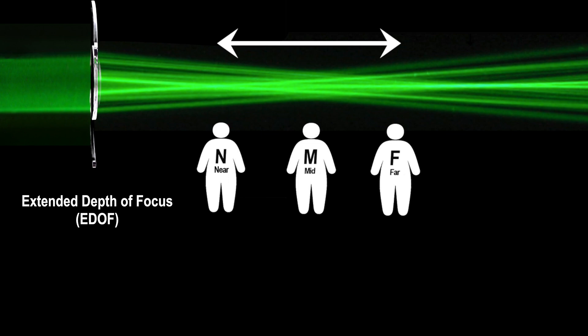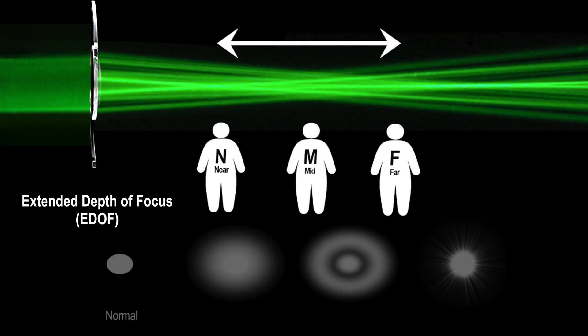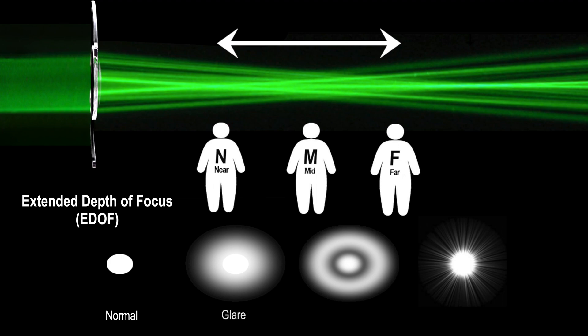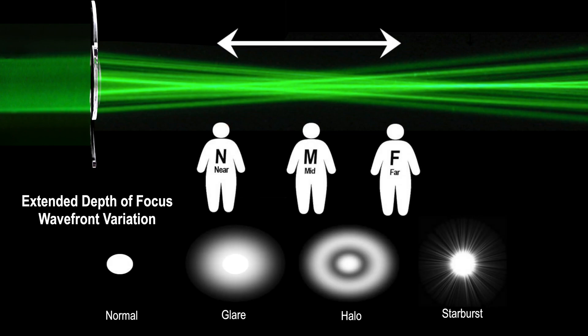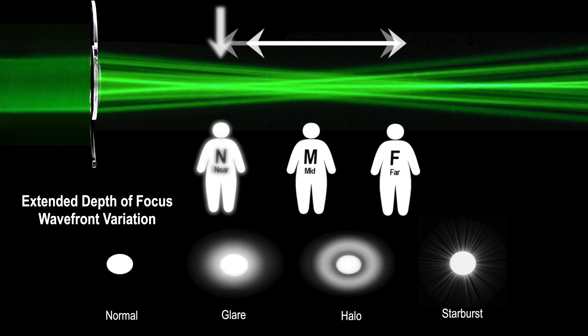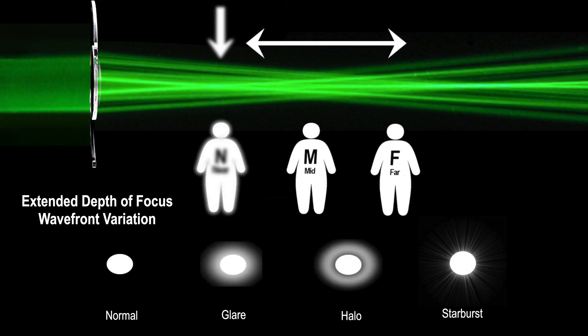Extended depth of focus lens, as the name implies, offers not only near and far vision, but also focal lengths in between in order to improve range of vision. There are many different types of technologies emerging, but all work by increasing the depth of focus and decreasing the need for eyeglasses. This lens, just like the multifocal lens, may also create photic phenomena such as glares, halos, and starbursts surrounding lights after dark as well as reduce nighttime vision ability. However, depending on the extended depth of focus lens type chosen, such photic side effects can be minimized, but at the expense of decreased near vision clarity.